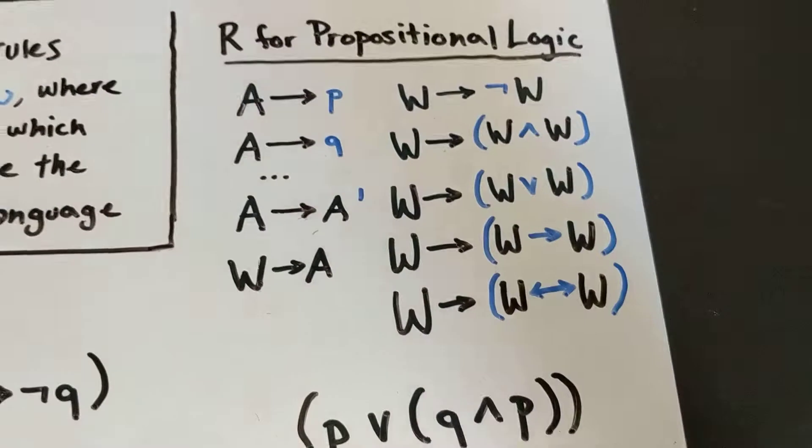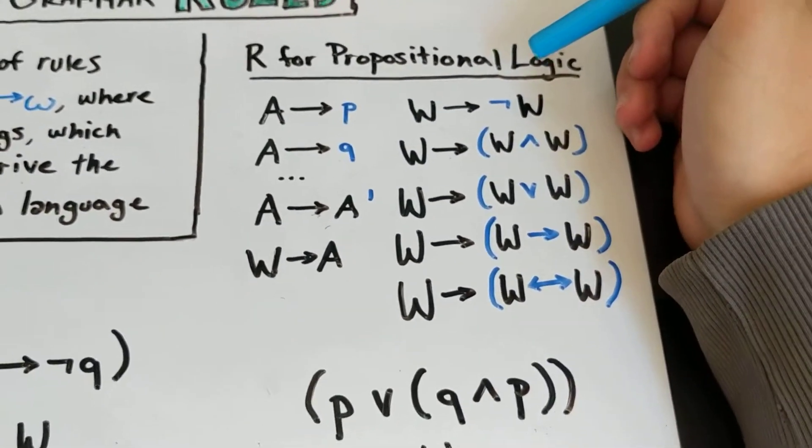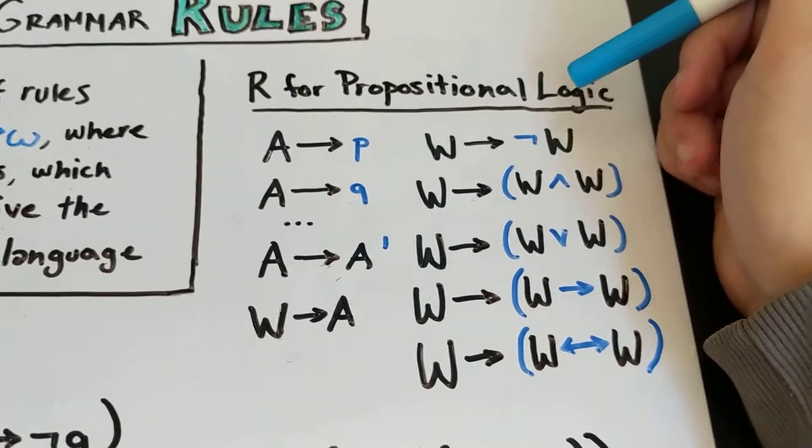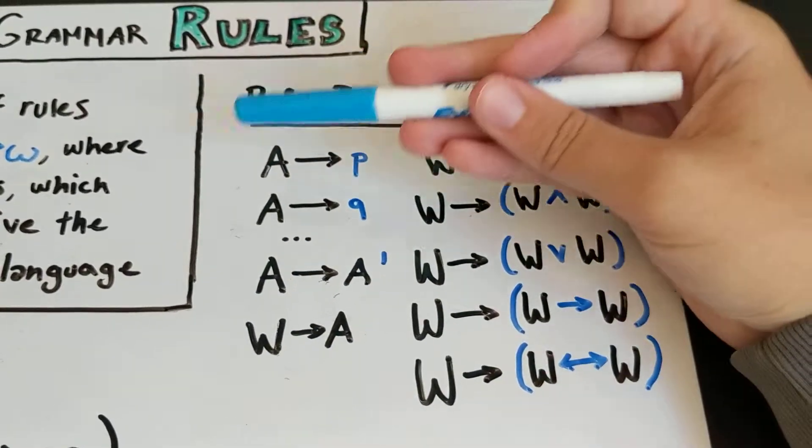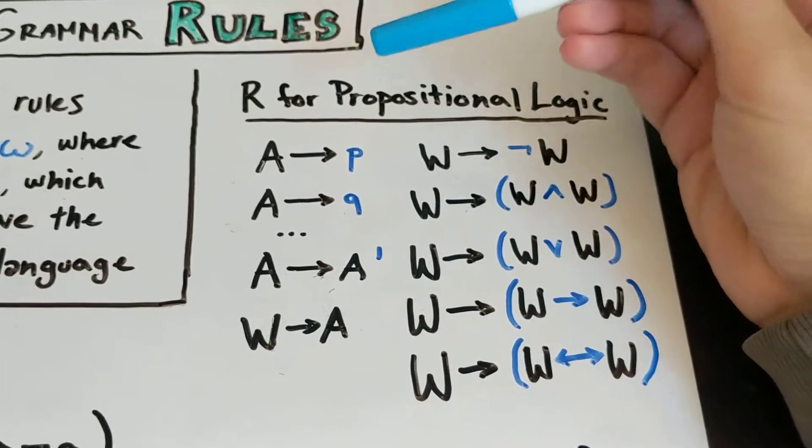So this is what the set of rules would look like for propositional logic. Now this looks completely overwhelming but really all that we're doing is formalizing the rules that we've already written out in words.